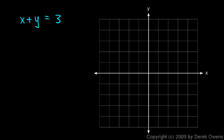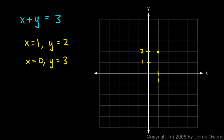Let's look at the equation x plus y equals 3 on our xy plane. A solution is x equals 1, y equals 2, because 1 plus 2 equals 3. Let's plot that point: x is 1 and y is 2. Now let's find another solution: x is 0 and y is 3, because 0 plus 3 equals 3. Let's plot that point up here.